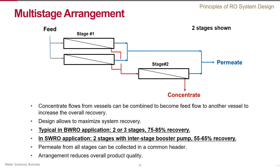To increase system recovery, two or more stages may be used. Concentrate from vessels of the first stage can be combined to become the feed flow to the vessels of the next stage. By doing this, one can increase recovery — for brackish systems up to 75–80% with two stages, and 85% or sometimes even more with a three-stage system. For seawater applications, you can achieve recovery of 55–65% with two stages. Typically, the number of pressure vessels in two consecutive stages is close to a 2-to-1 ratio, requiring even flow through individual pressure vessels from stage to stage.